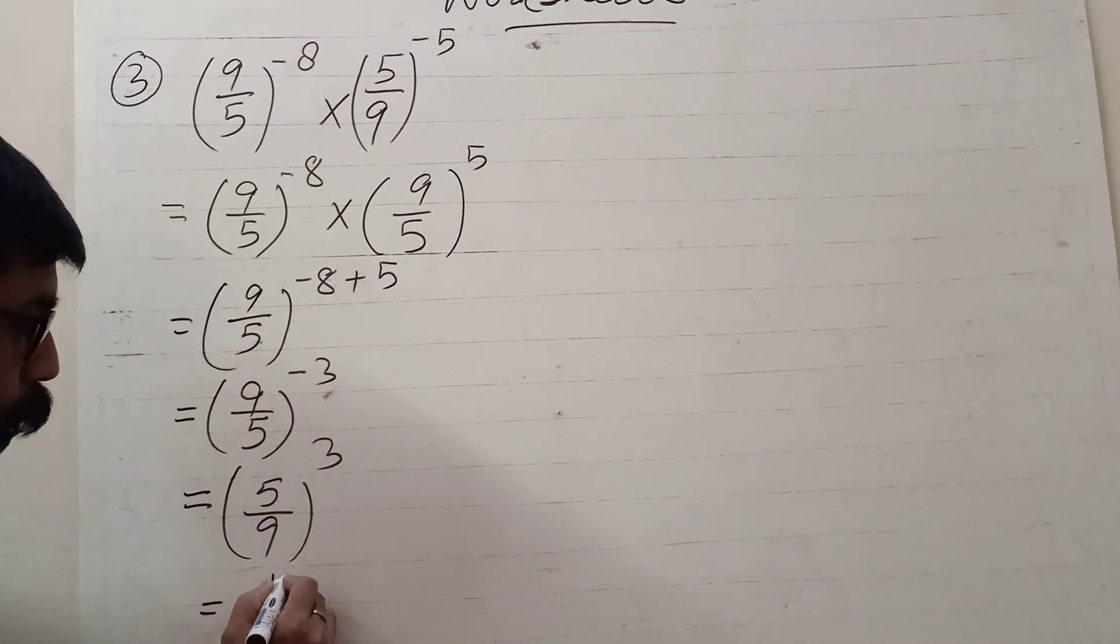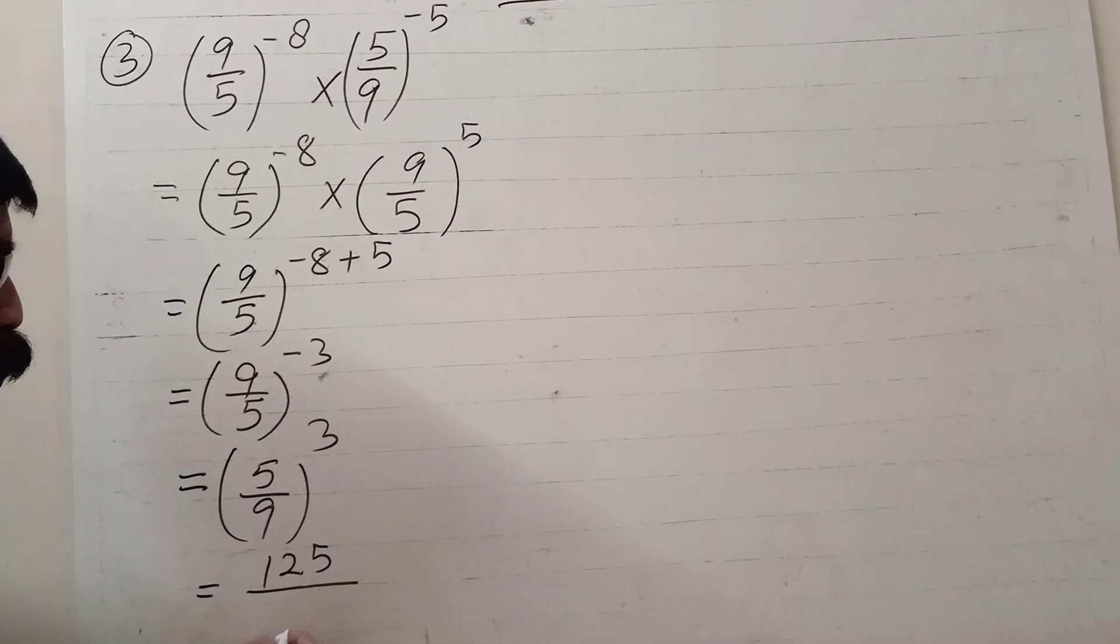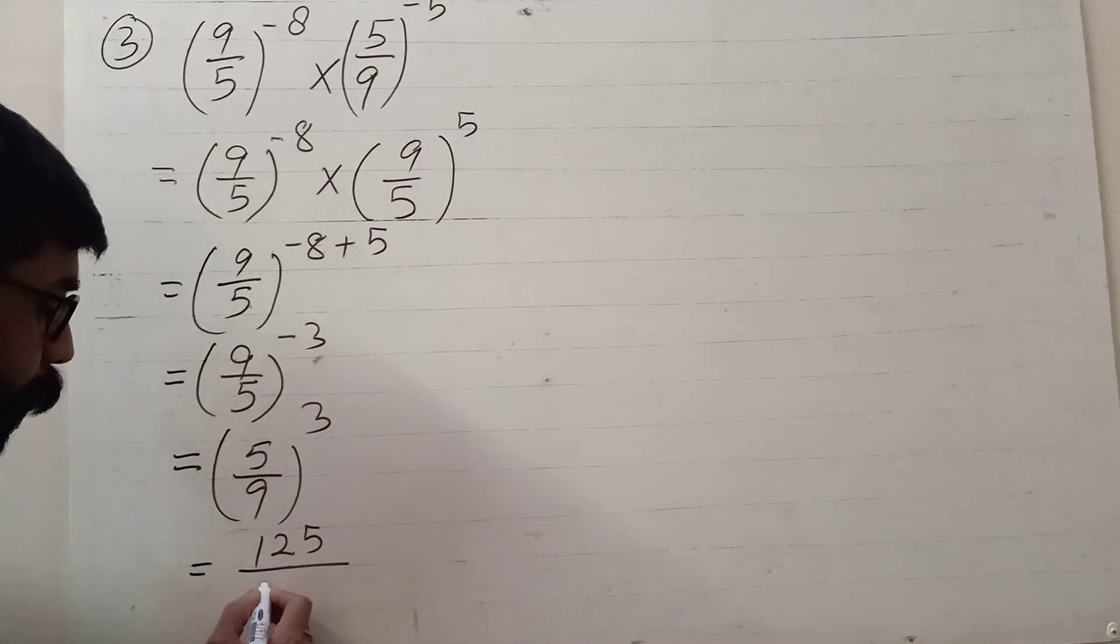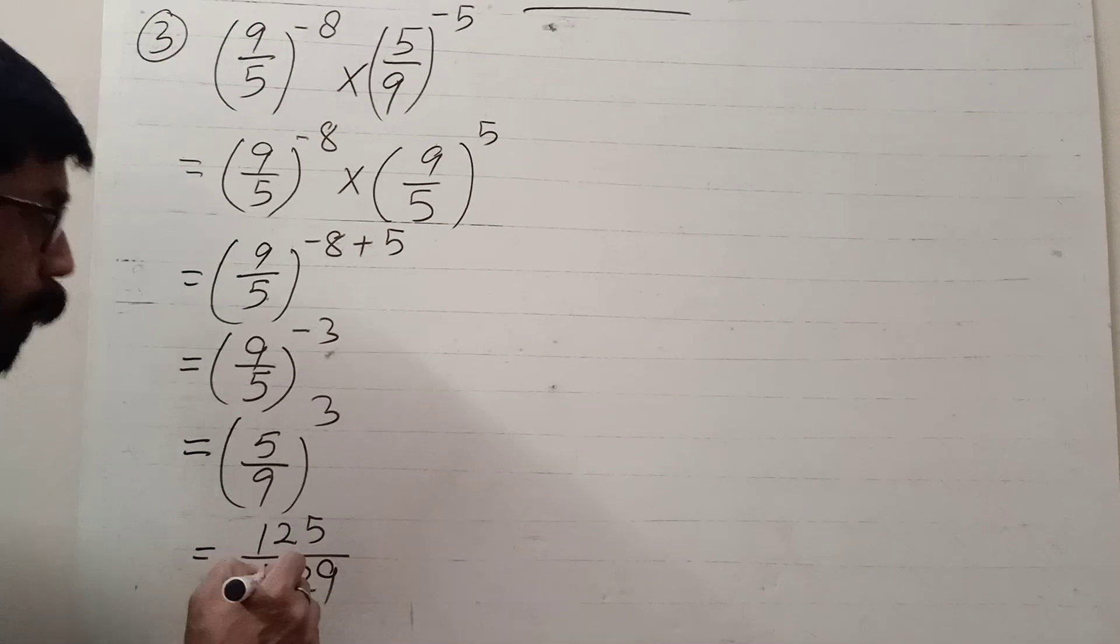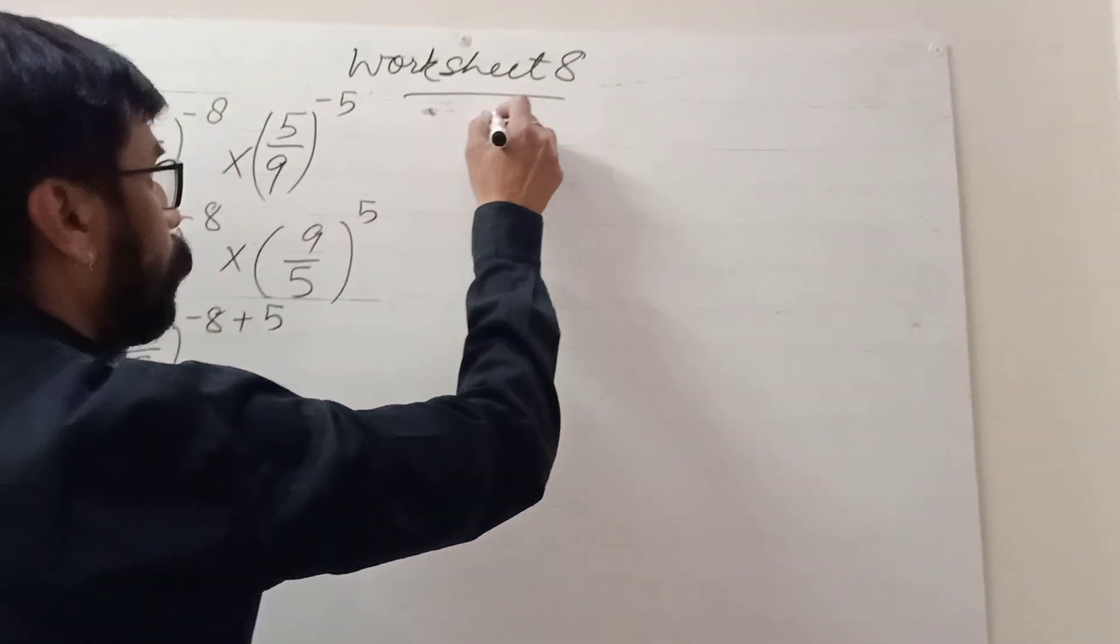5 cube is 125. 9 cube is 729. Question number 4 of this one is given.